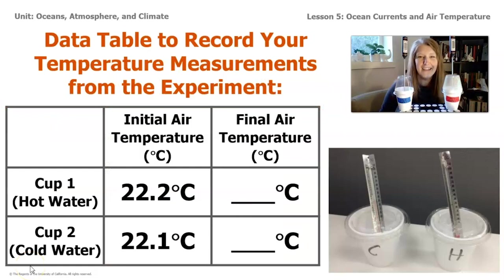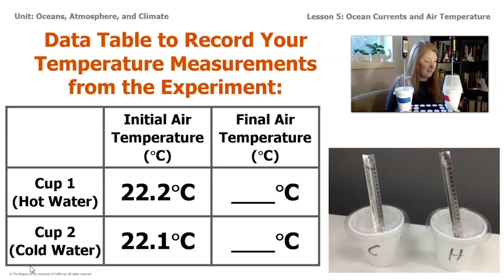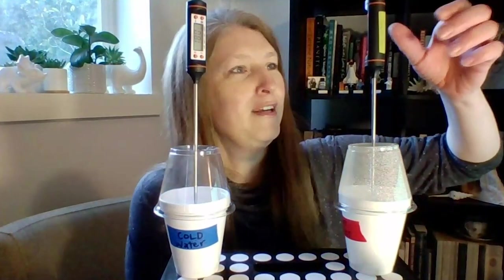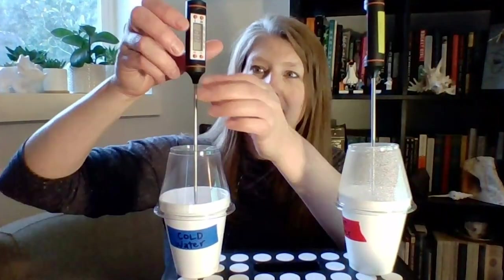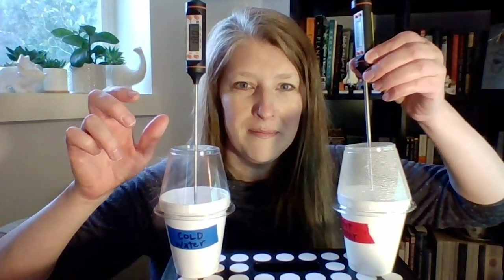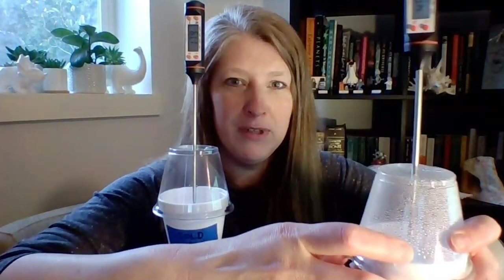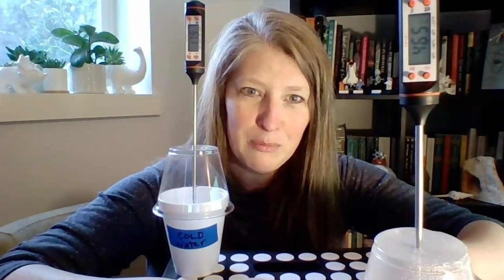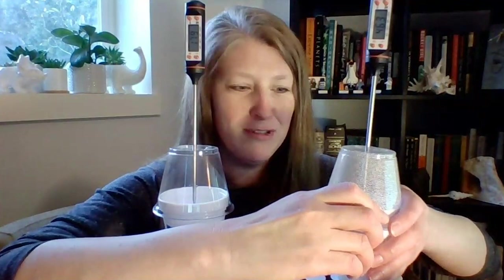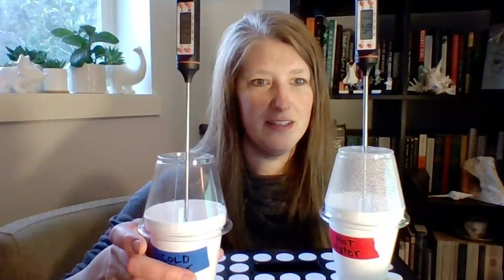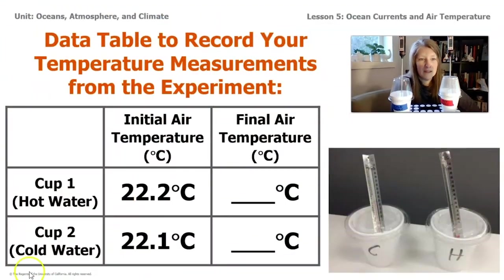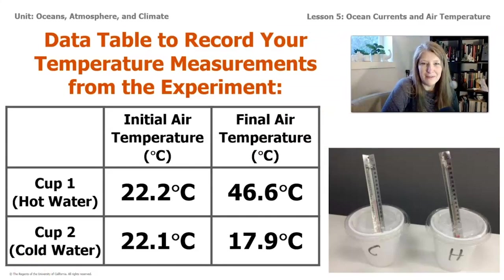The timer's going off — let's look at our results. The thermometer in the hot water cup reads 46.6 degrees Celsius — that's a huge increase. The cold water cup reads 17.9 degrees Celsius. Let's record that in our data table.